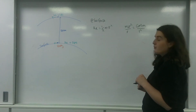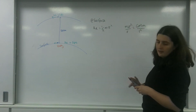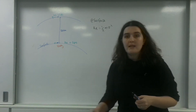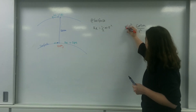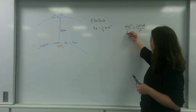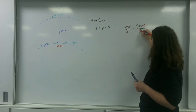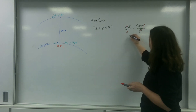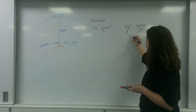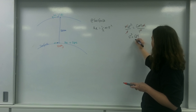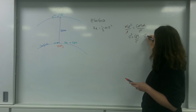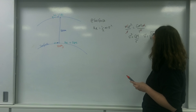I know kinetic energy is one-half mv squared, so I need to find the velocity the object is moving at the surface. I do that by equating mv² / r and GMm / r². So the orbital velocity v squared is GM / r, meaning v equals the square root of GM over r.